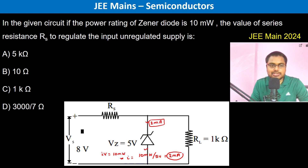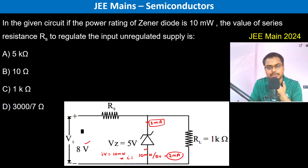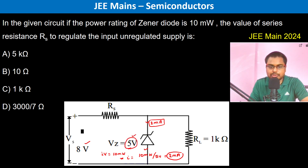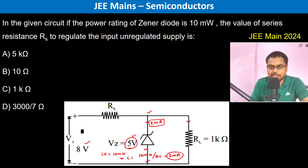The power rating of the Zener and the value of series resistance to regulate the input supply — the input is 8 volts and the Zener current is 2 milliampere. Since the Zener voltage is 5 volts, the voltage across the 1000 ohm load resistor is also 5 volts. Therefore, the current through it is 5 divided by 1 kilohm, which is 5 milliampere.